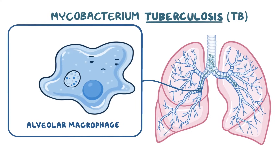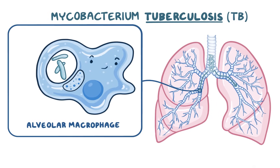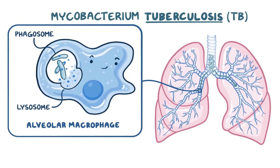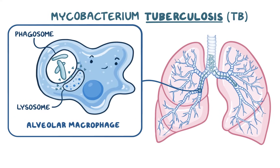Macrophages digest and destroy foreign cells. With TB, they recognize foreign proteins on the cell surface and phagocytize them, essentially packaging them into a space called a phagosome. With most cases, the macrophage then fuses the phagosome with a lysosome, which has hydrolytic enzymes that can break down any biochemical molecule. TB is tricky though — once inside the macrophage, they produce a protein that inhibits this fusion, which allows the mycobacterium to survive, proliferate, and create a localized infection.